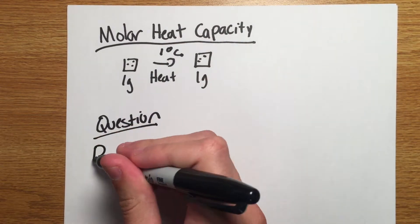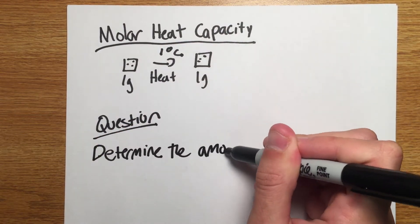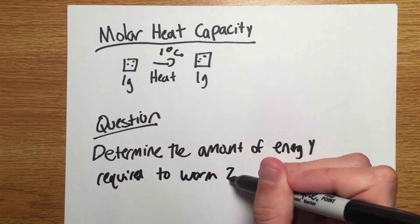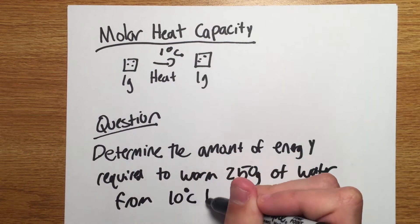Let's take this question for example. Determine the amount of energy required in joules needed to warm 250 grams of water from 10 degrees Celsius to 80 degrees Celsius.